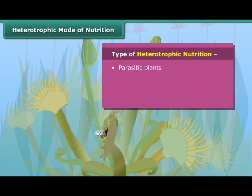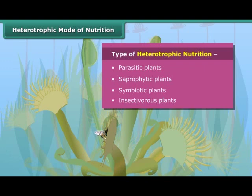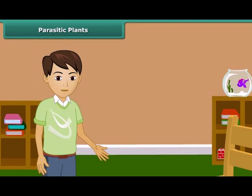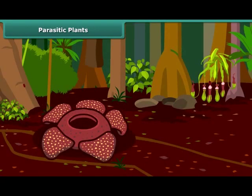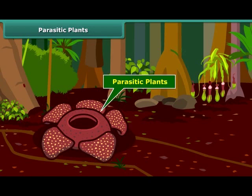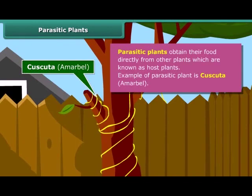The four types are: parasitic plants, saprophytic plants, symbiotic plants, and insectivorous plants. Parasitic plants are plants which obtain their food directly from other plants, known as the host. Kaskata or Amarbel is an example of a parasitic plant. It coils around the stem and branches as a yellow tubular structure. It does not contain chlorophyll, so it takes ready-made food from the plant on which it is climbing, which is called the host.